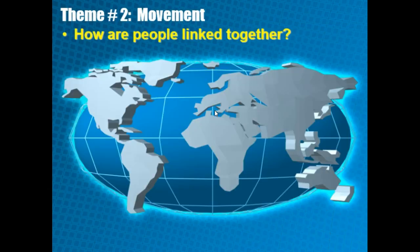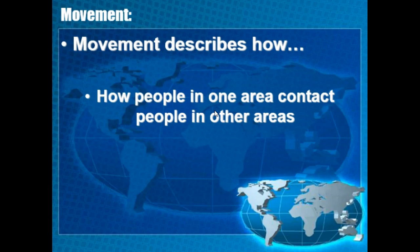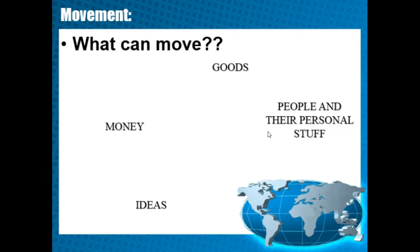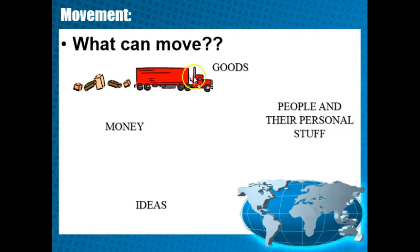Theme number two: movement. How are people linked together? Movement talks about how we are all connected — how people in one area are able to contact or communicate with people in other areas. We can communicate and transfer ideas in the form of goods. For example, things from Japan come into anime stores here locally. That culture, that good, is coming from a different area into our location, or even vice versa.